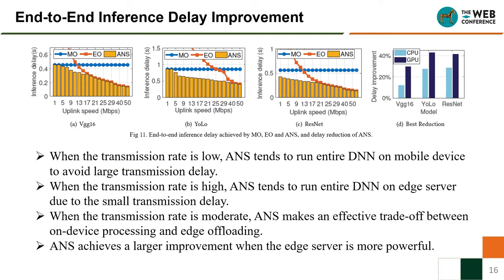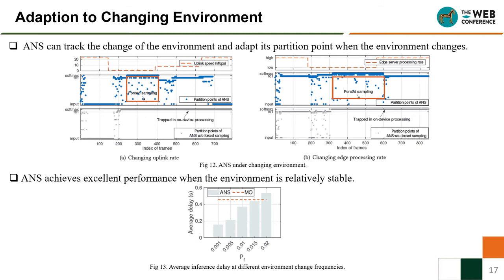Figure 11 shows the end-to-end inference delay improvement. When the transmission rate is low, ANS tends to run the entire DNN on the mobile device to avoid large transmission delay. When the transmission rate is high, ANS tends to run the entire DNN on the edge server due to small transmission delay. When the transmission rate is moderate, ANS makes an effective trade-off between on-device processing and edge offloading. ANS achieves large improvement when the edge server is more powerful. Figure 12 shows ANS under a changing environment — ANS can track the change of the environment and adapt its partition point. Figure 13 shows average inference delay at different environment change frequencies; ANS achieves excellent performance when the environment is relatively stable.